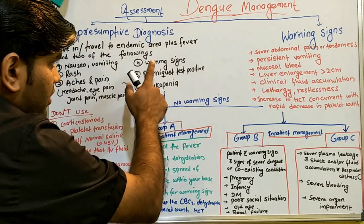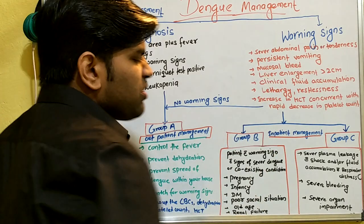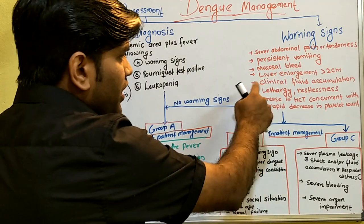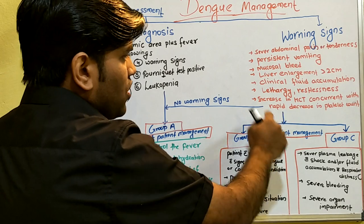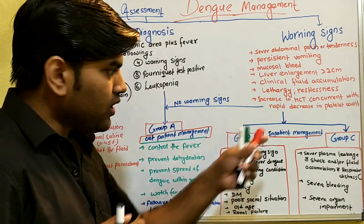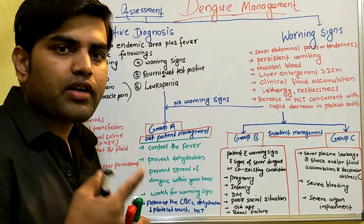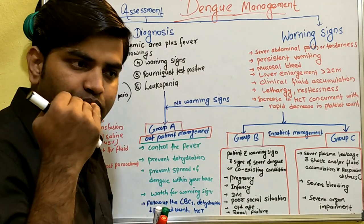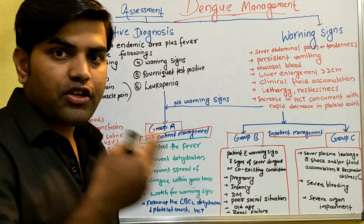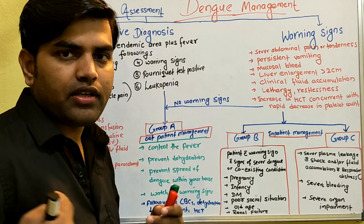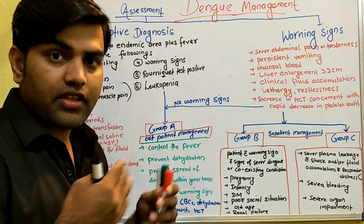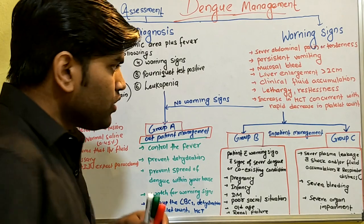Warning signs include: severe abdominal pain or tenderness, persistent vomiting, mucosal bleeding, liver enlargement greater than two centimeters, clinical fluid accumulation, lethargy and restlessness, or a rise in hematocrit concurrent with a rapid decrease in platelet count. A key dengue criterion is hematocrit increase greater than 20%, which means fluid is leaking from capillaries — hemoconcentration is occurring. This is a major warning sign indicating plasma leakage and a critical stage.